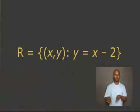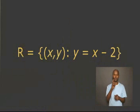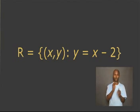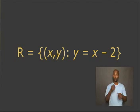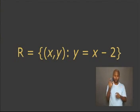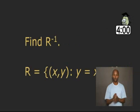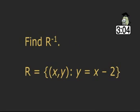It is time for an activity, students. Let X be R-related to Y, such that Y equals X minus 2. Working in pairs, try to find the inverse of R. Begin.